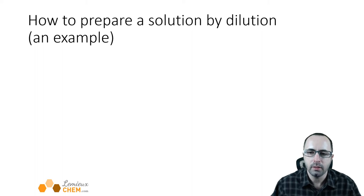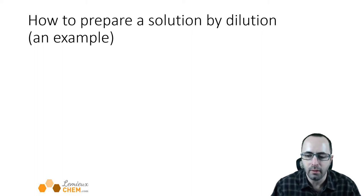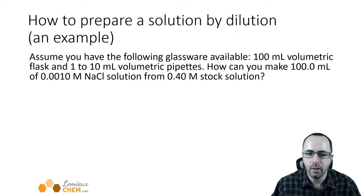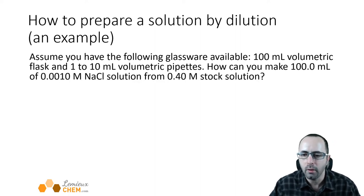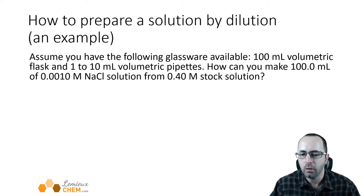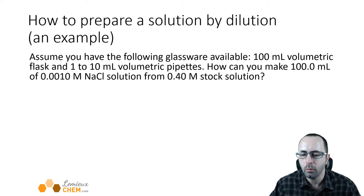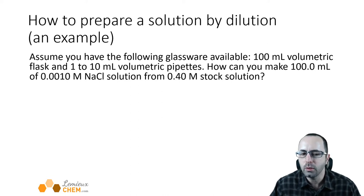So how will we prepare a solution by dilution? I think this is best demonstrated with an example. Assume you have the following glassware: a 100 milliliter volumetric flask and 1 to 10 milliliter volumetric pipettes — which is a pretty normal setup in the lab. How could you make 100 milliliters of 0.000010 molar sodium chloride from a 0.4 molar stock solution?